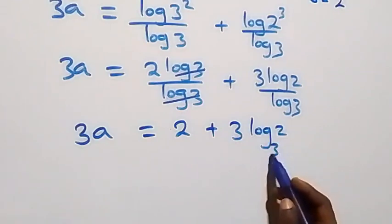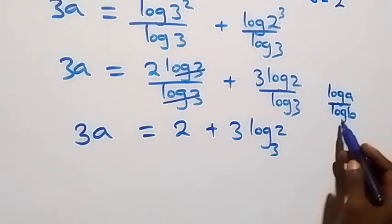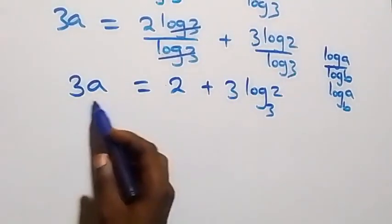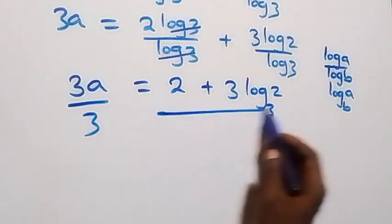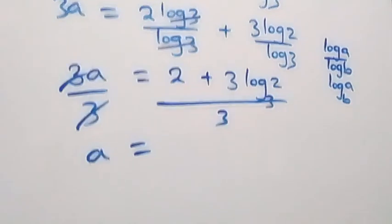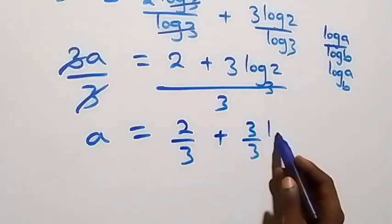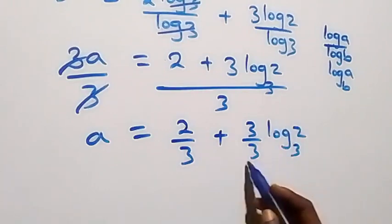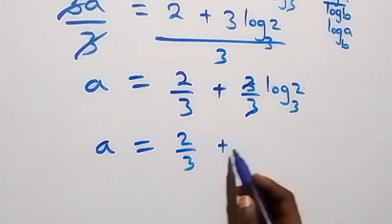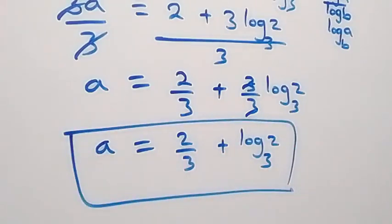From the change of base rule, log a over log b is the same as log a to base b. Now we divide both sides by 3. Dividing, 3 cancels on the left and we have a left, which equals 2 over 3 plus log 2 to base 3. So here we have the value of a as 2 over 3 plus log 2 to base 3.